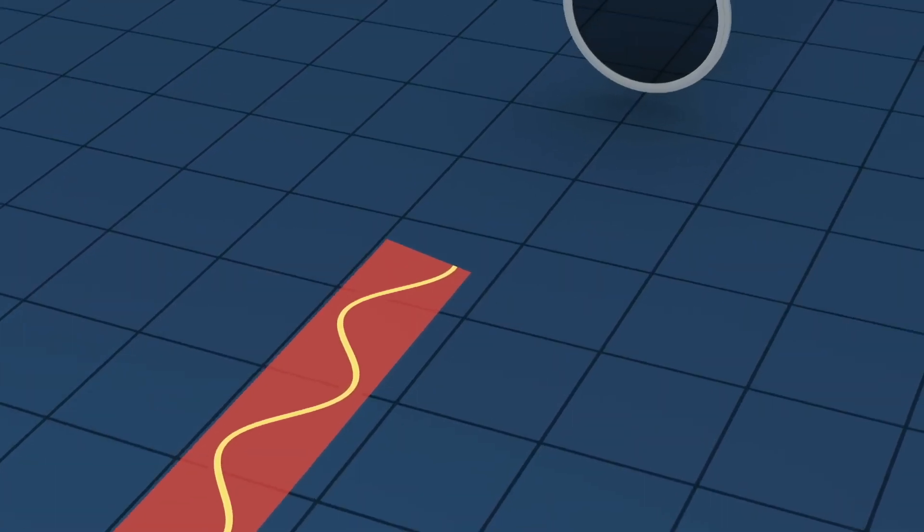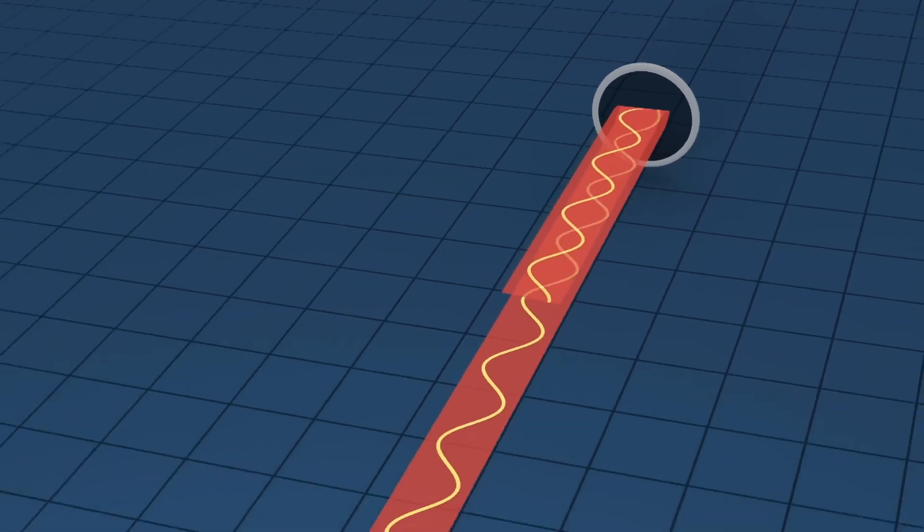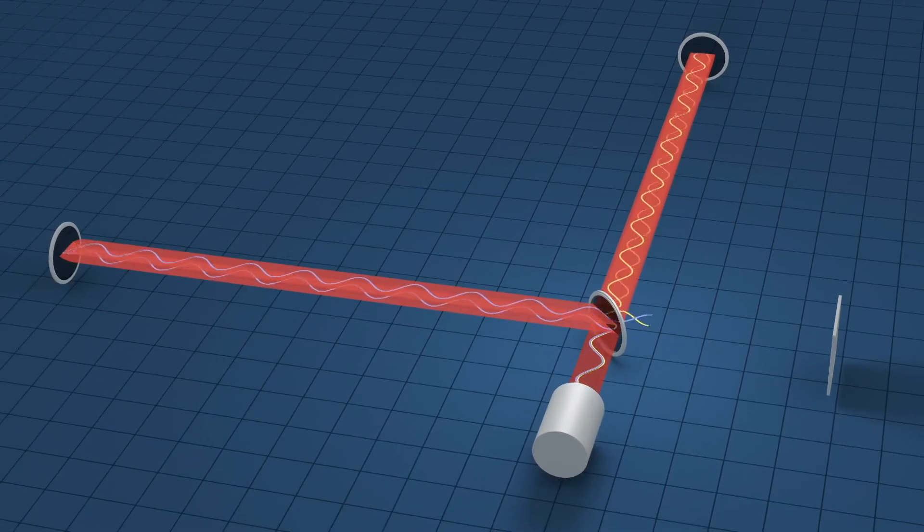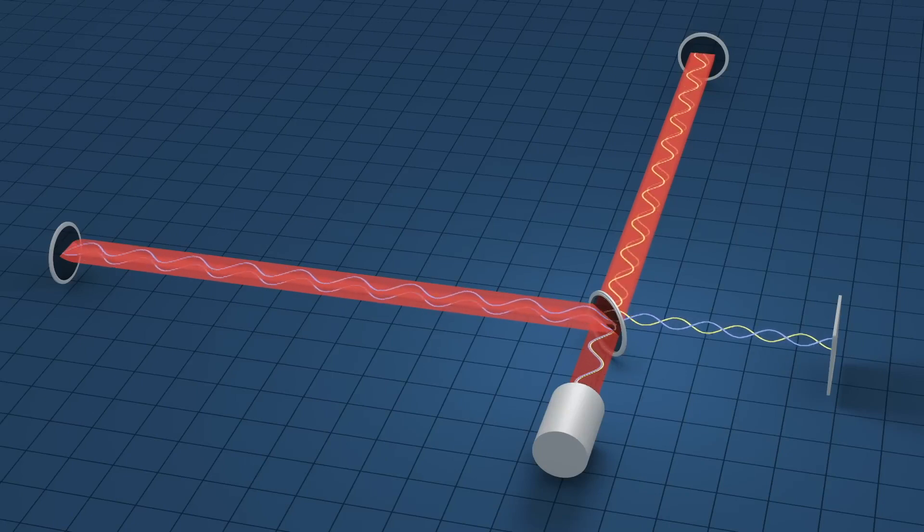And then when you recombine the light that bounces between those mirrors you can compute with very good accuracy the distance or at least the difference between the distance of this arm between the two mirrors.